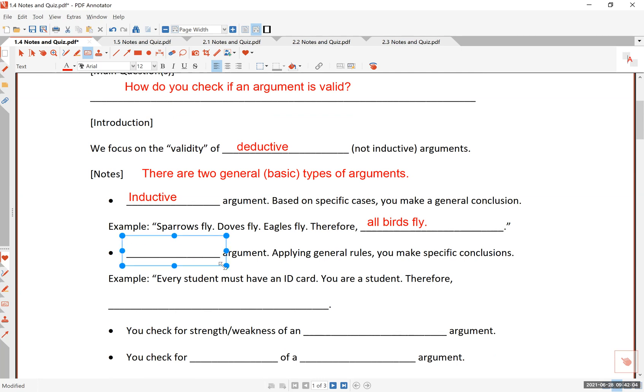The other type of argument is called deductive. So deductive arguments are ones where you apply general rules to make specific conclusions. So let me go ahead and write this on the side here. Inductive is to go from specific to general. That's a good and maybe a quick way of remembering what an inductive argument is. And deductive is the other way around.